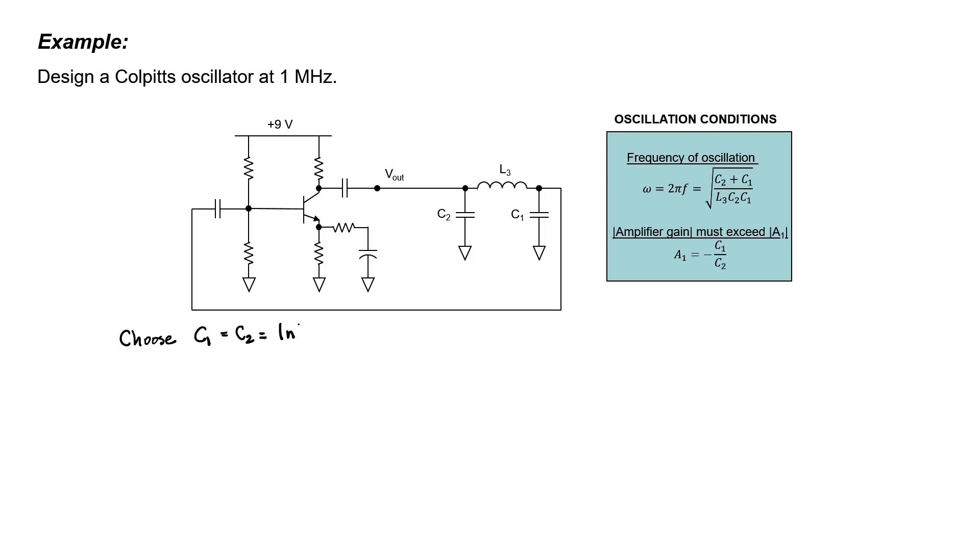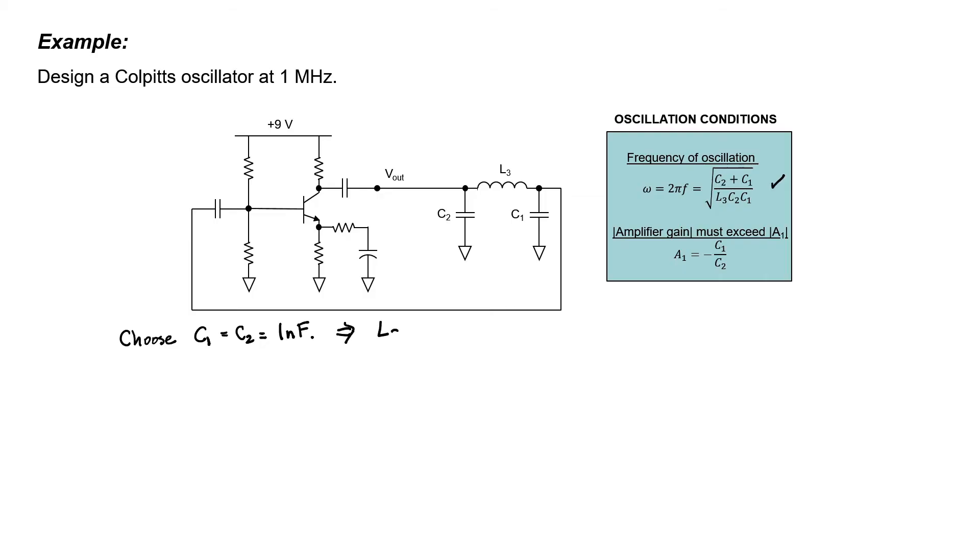So we want the capacitors that we choose to be more than a few hundred pF. I'm going to choose capacitors C1 and C2 to both be 1 nF. In this situation, we need to ensure that the magnitude of the gain of our common emitter amplifier exceeds 1. Because the frequency is given, however, let's first find the inductor L3.